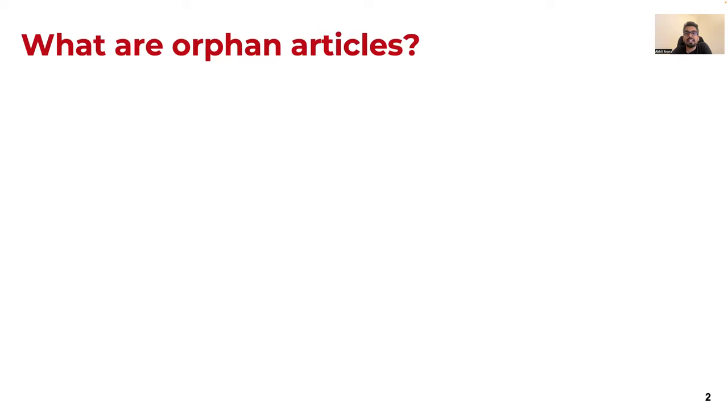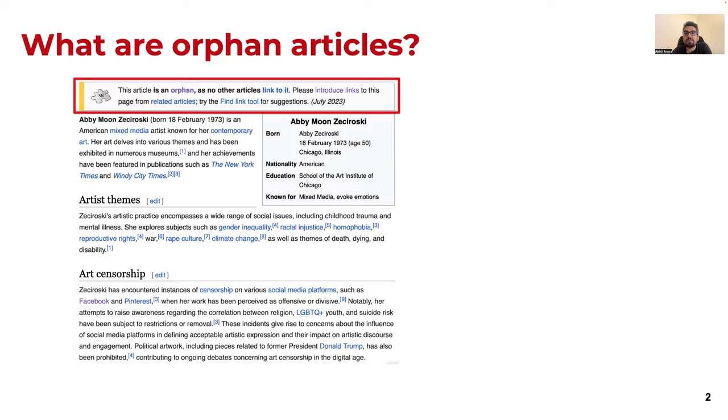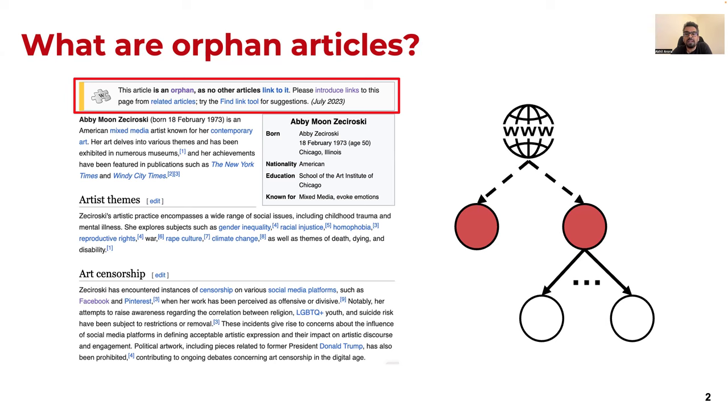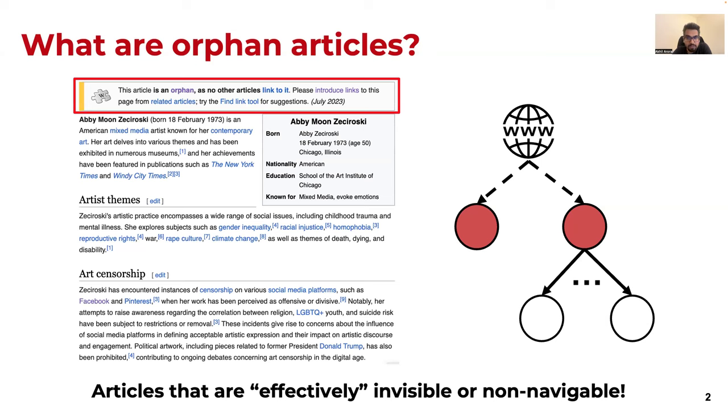So what are orphan articles? An article that is not linked from any other Wikipedia article is termed as an orphan. As shown in the figure, editors clearly mark orphan articles with a note visible at the top. Looking at a toy network of Wikipedia articles, it is clear that orphan articles denoted using red circles could link to other articles or may even be reached via the web, but no other article links to them. Thus, despite their content, orphan articles cannot contribute fully to a redirected learning experience as they are de facto invisible to readers browsing Wikipedia.